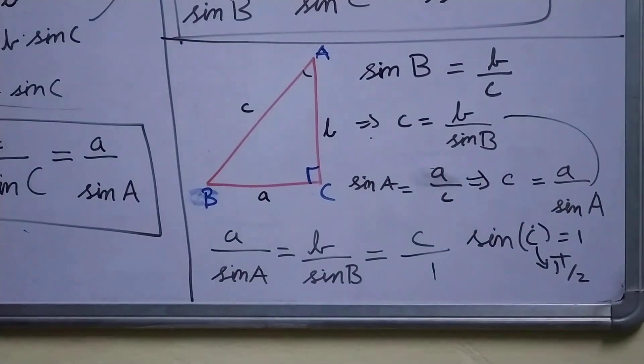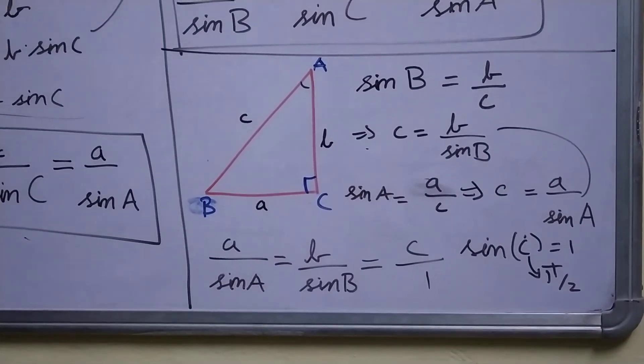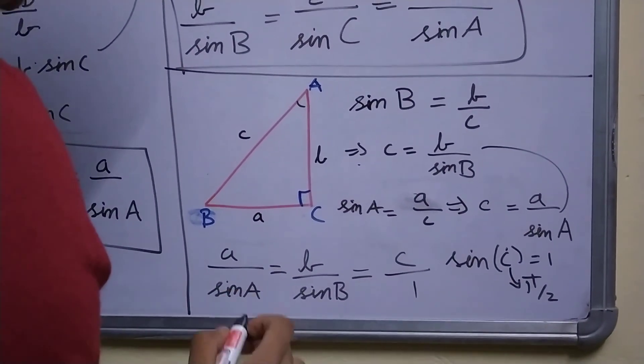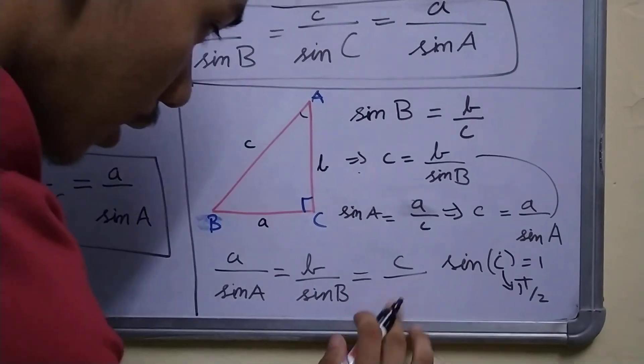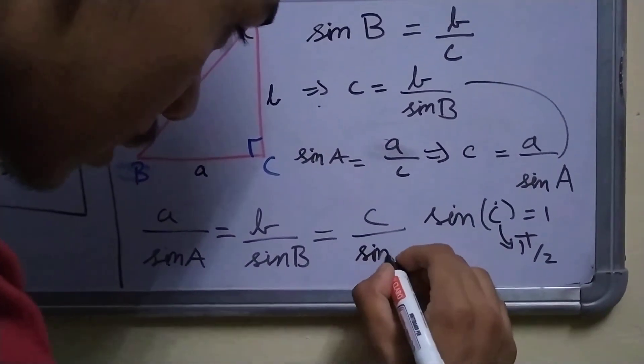And in this case, sin C is also equal to 1 because C is π by 2, so sin(π/2) is 1. So in a right angle triangle, this relation still holds: a upon sin A is equal to b upon sin B is equal to c upon sin C, and one of the angles is 90 degrees.